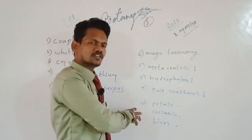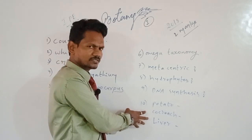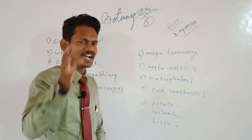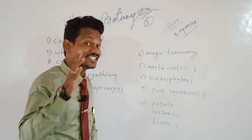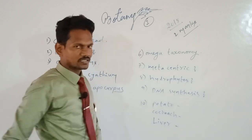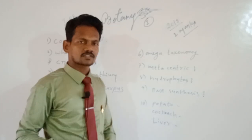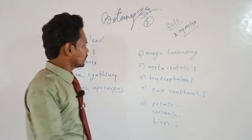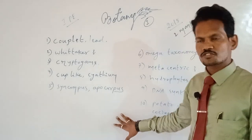Last question: write the components present in potato, cockroach exoskeleton, and liver. In potato, starch is present. The exoskeleton of the cockroach is made of chitin. In the liver, glycogen is synthesized. So the answers are: starch, chitin, and glycogen.